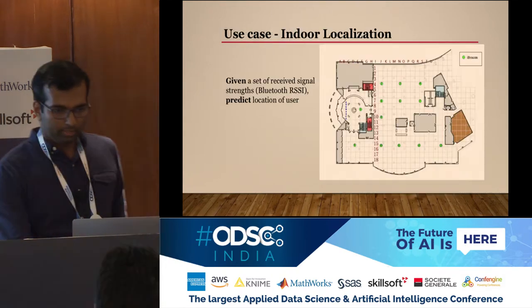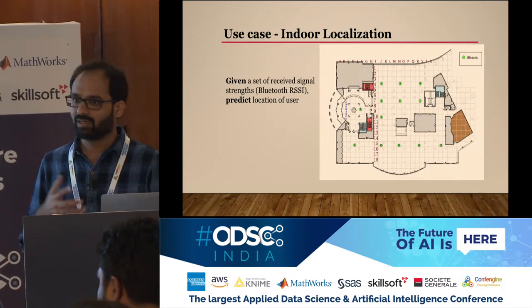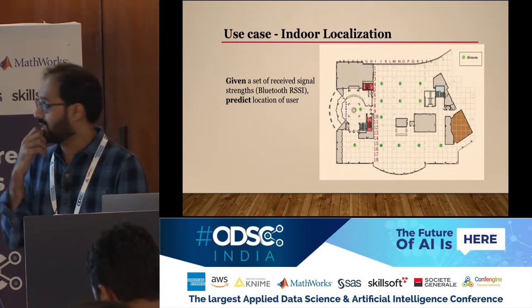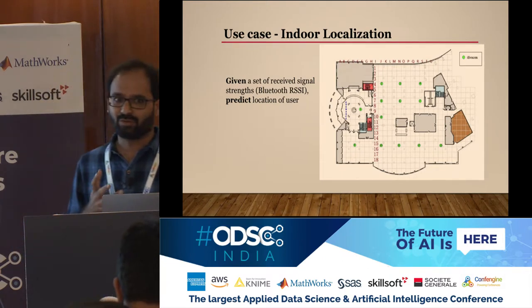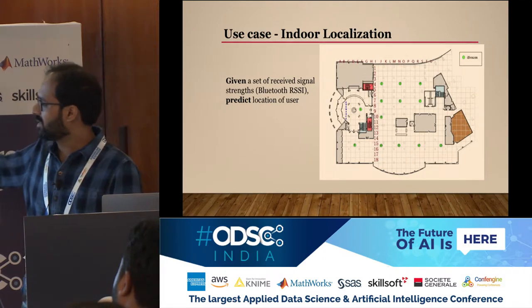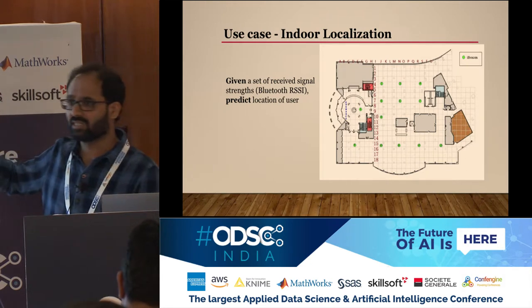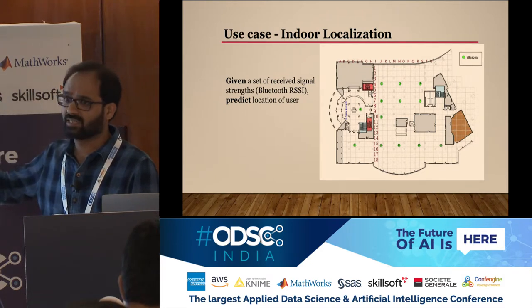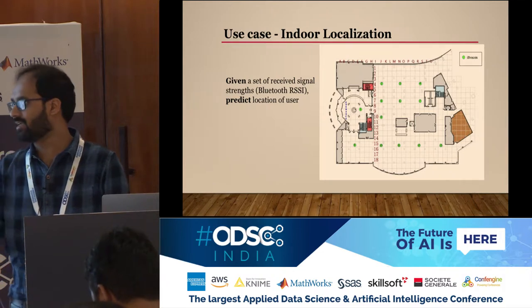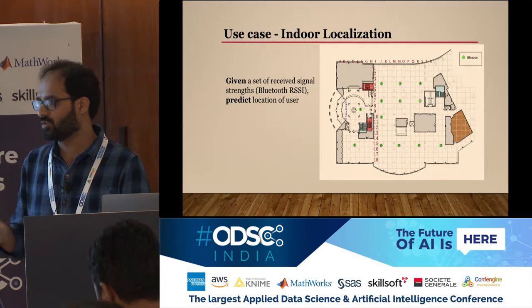Now we will go through a use case. For this, we chose indoor localization. Typically it's a floor map laid out with a grid, and you have a set of wireless access points or Bluetooth beacons at fixed coordinates. A user walks in, records the received signal strength from these beacons, and then you need to predict their location on the floor map. That is a high-level view of the problem statement of an indoor localization system.